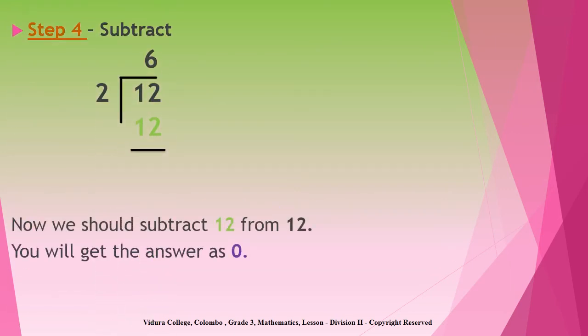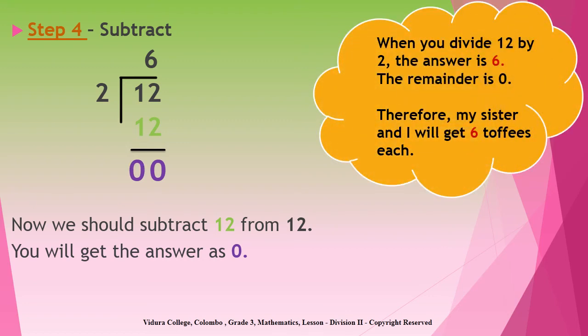The final step is to subtract the lower digit from the upper digit. First, you should subtract the units place numbers. So, when you subtract two from two, the answer is zero. Then, you should subtract the tens place digits. When you subtract one from one in the tens place, you will get zero as the answer. Therefore, when you divide twelve by two using the long division, the answer is six with no remainder. So, my sister and I will get six toffees each when divided equally.